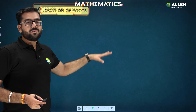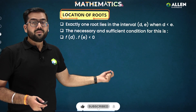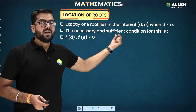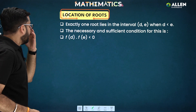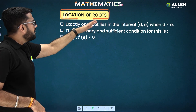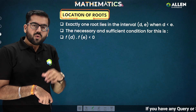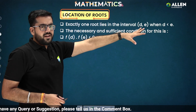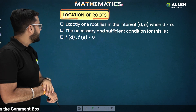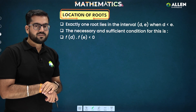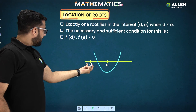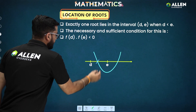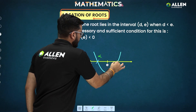We have one more type to discuss, along with one more previous year question. This shows the importance of the topic 'Location of Roots.' The second type is: exactly one root lies in the interval (d, e), where d < e. The necessary and sufficient condition for this is f(d)·f(e) < 0. Between d and e there is exactly one root alpha, and the other root beta lies outside.